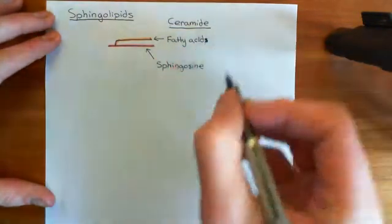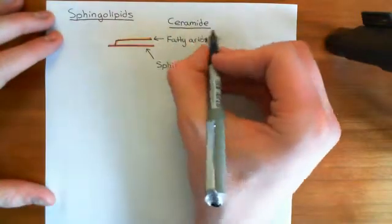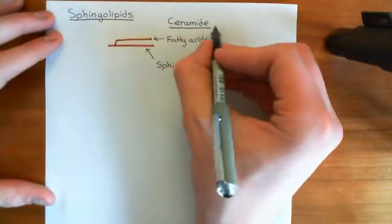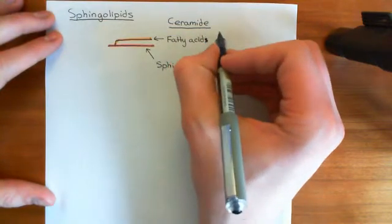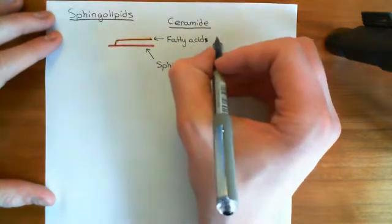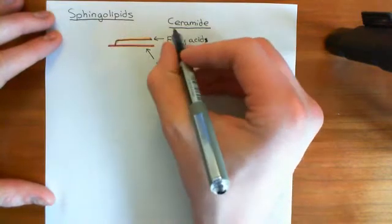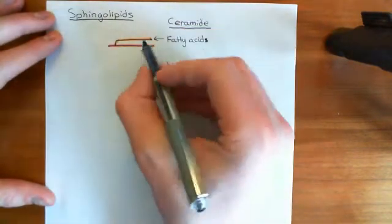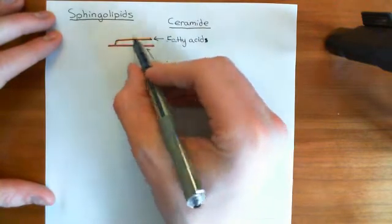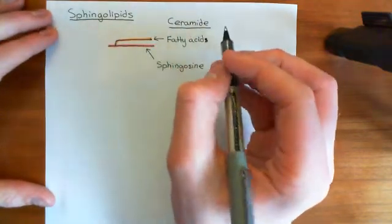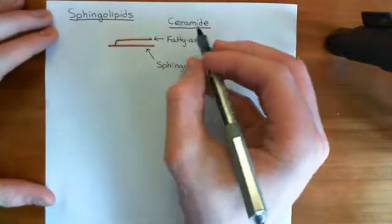That creates a type of molecule called a ceramide. Just like there is not just one triacylglycerol or not just one phosphatidic acid, there is not just one ceramide because you can have many different fatty acids. To go from a ceramide to a sphingolipid, what you then need to do is add on a special group onto the top of the molecule.